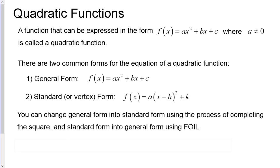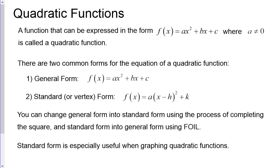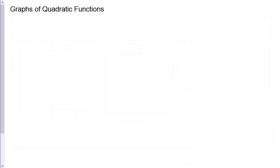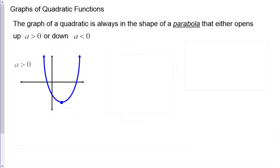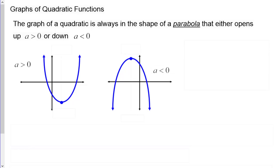You can change general form into standard form using completing the square, and change standard form into general form using FOIL. Standard form is especially useful for graphing. The graph of a quadratic is always a parabola that opens up if the coefficient a is greater than zero, or down if a is less than zero.